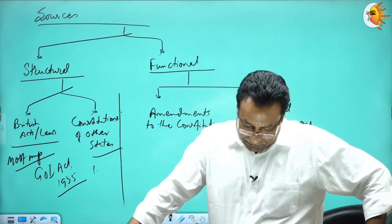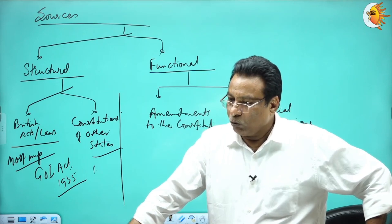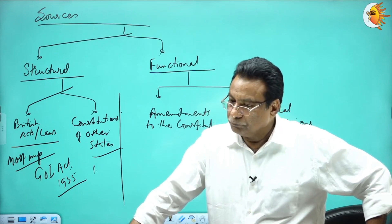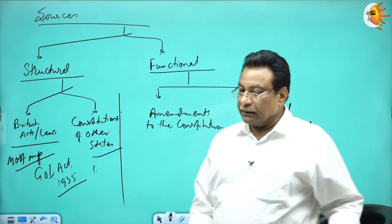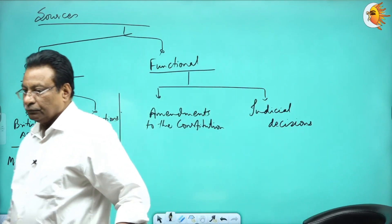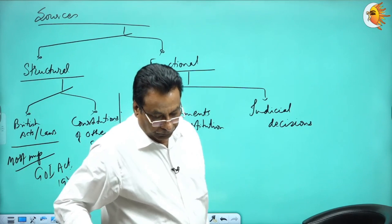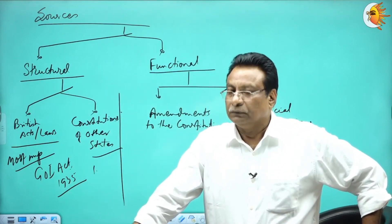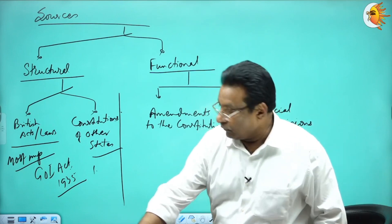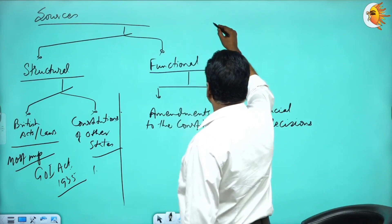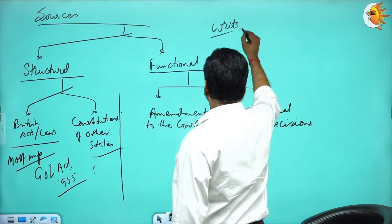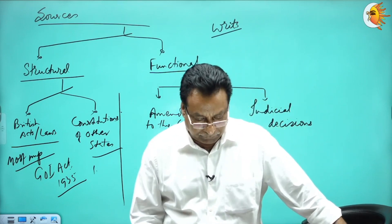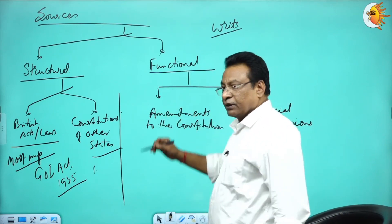From other states, the first is the British constitutional system. We have taken features like parliamentary system, bicameralism, rule of law, single citizenship, and provision for writs — writs like habeas corpus, mandamus and others. These are some of the prominent things we have taken from Britain.